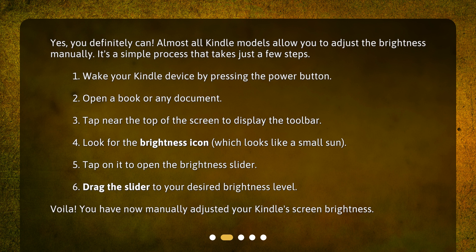5. Tap on it to open the brightness slider. 6. Drag the slider to your desired brightness level. Voila! You have now manually adjusted your Kindle's screen brightness.